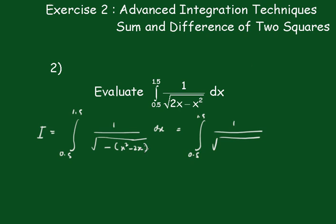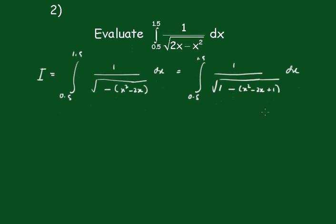Right, when you're completing the square, that'll actually be a minus, so you'll need a 1 at the front. So it'll be 1 minus x squared minus 2x plus 1 dx. And of course that's going to be 1 over square root of 1 minus x minus 1 all squared dx.